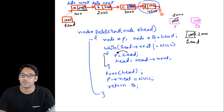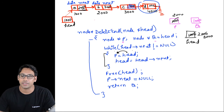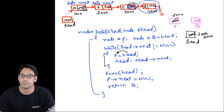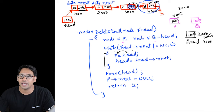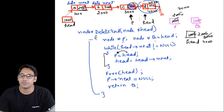Then head = head->next, so head now stores 3000. We check the condition again: head->next at node 3000 is not null yet, so p = head means p stores 3000, and head = head->next means head now stores 4000. The next part of node 4000 is null, so the while loop condition fails. After the loop, p is pointing to the node at 3000 and head is pointing to the node at 4000.